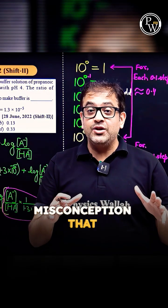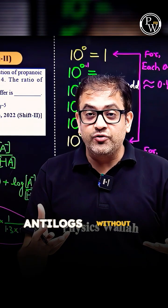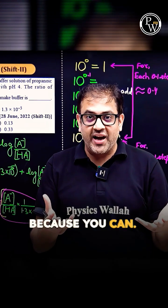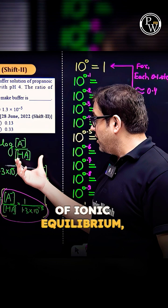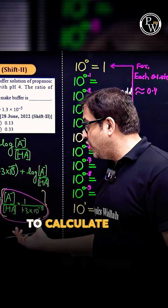Don't be in this misconception that you cannot find anti-logs without logarithmic table, because you can. This JEE 2022 question of Ionic Equilibrium, it was supposed to calculate log.